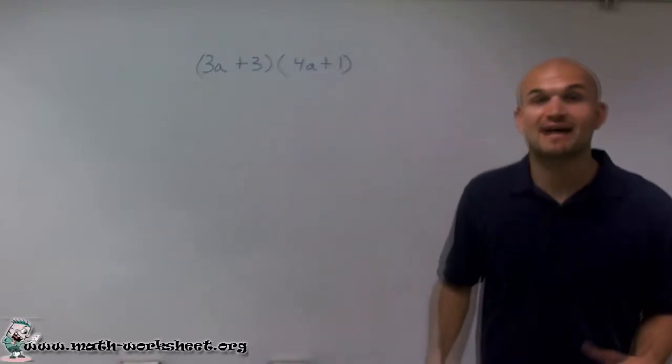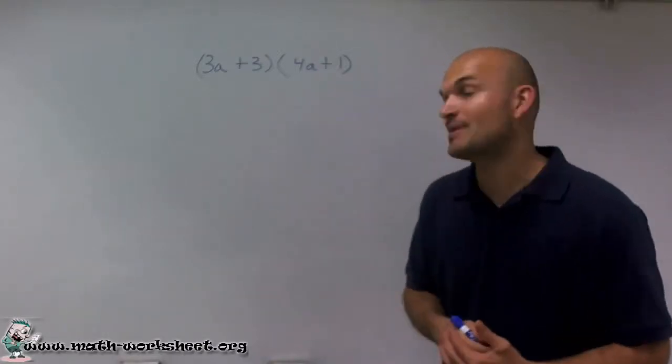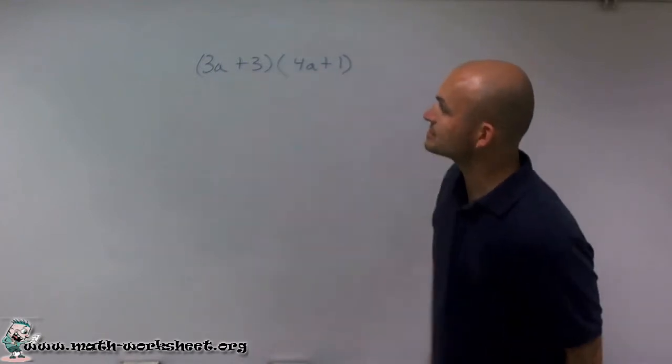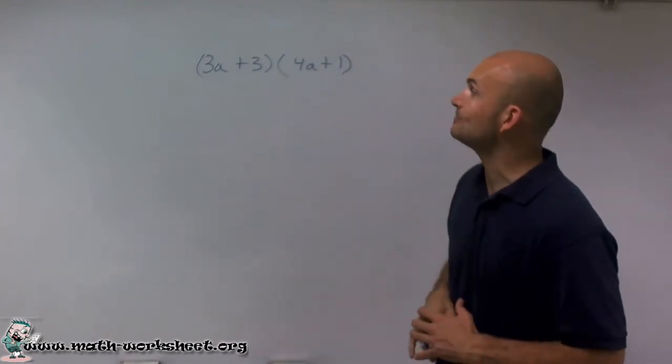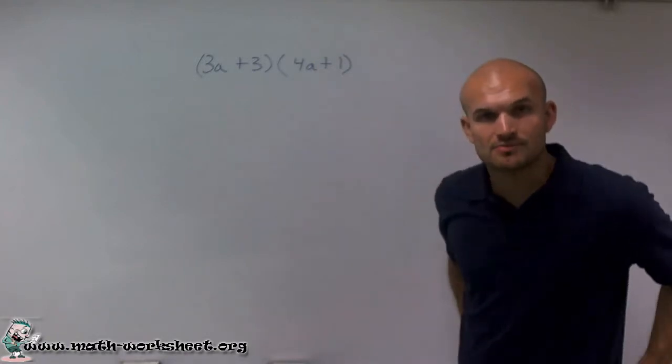Welcome. What I want to do today is show you how to multiply two binomials by each other. So what I have first is my first binomial, which is 3a plus 3, and I'm going to multiply that by 4a plus 1.